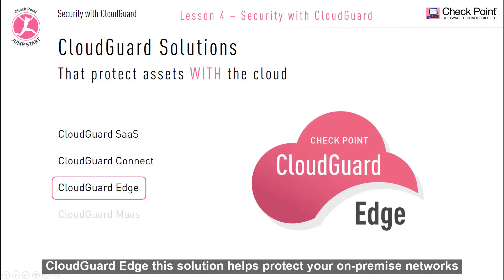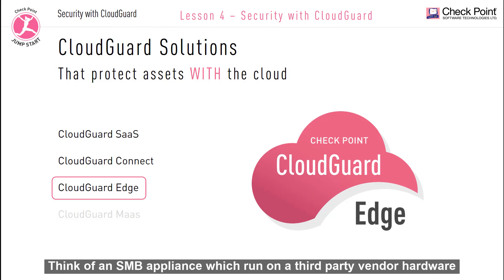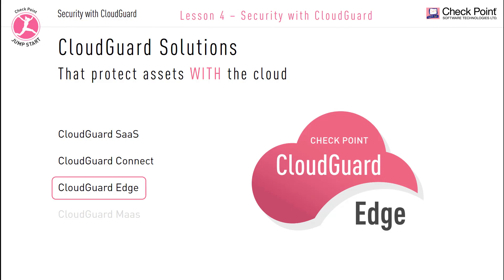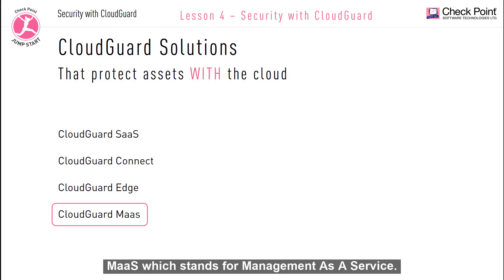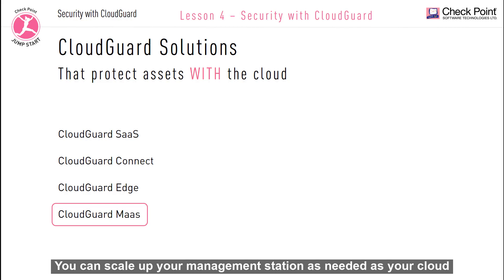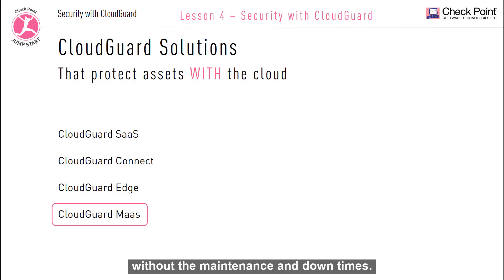CloudGuard Edge helps protect your on-premise networks using an SD-WAN appliance. SD-WAN appliances are third-party gateway appliances that have virtualization capabilities and run Checkpoint security solutions in a compartmentalized VM within the SD-WAN appliance — think of an SMB appliance running on third-party vendor hardware. CloudGuard Mass takes the Checkpoint Gold Standard Management Server and ports it into a cloud solution — essentially a Smart-1 for the cloud — which stands for Management as a Service. You can scale up your management station as needed as your cloud infrastructure grows, and Checkpoint handles all upgrading, hotfixing, and patching so you always get the latest security without maintenance or downtime.